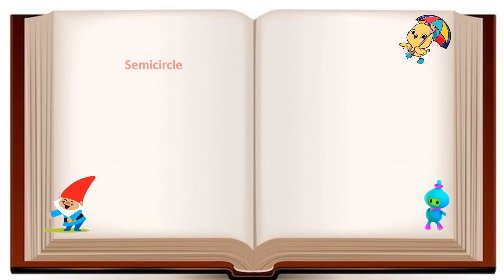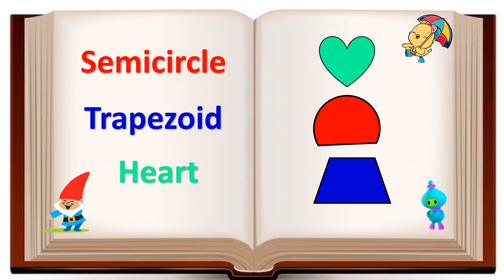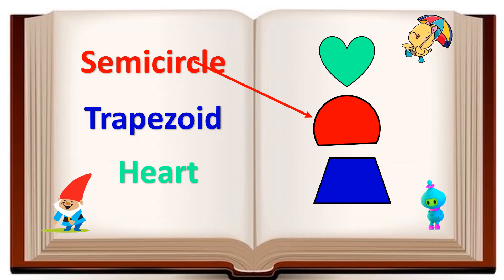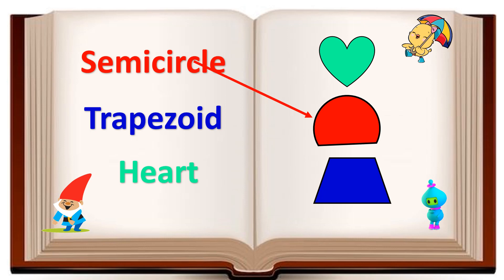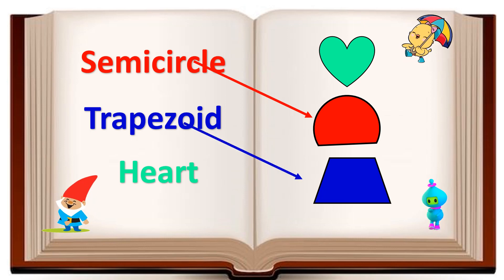Let's match the spelling of semicircle with its correct picture. Yay, good job! Now we will match the spelling of trapezoid with its correct picture. Fantastic!